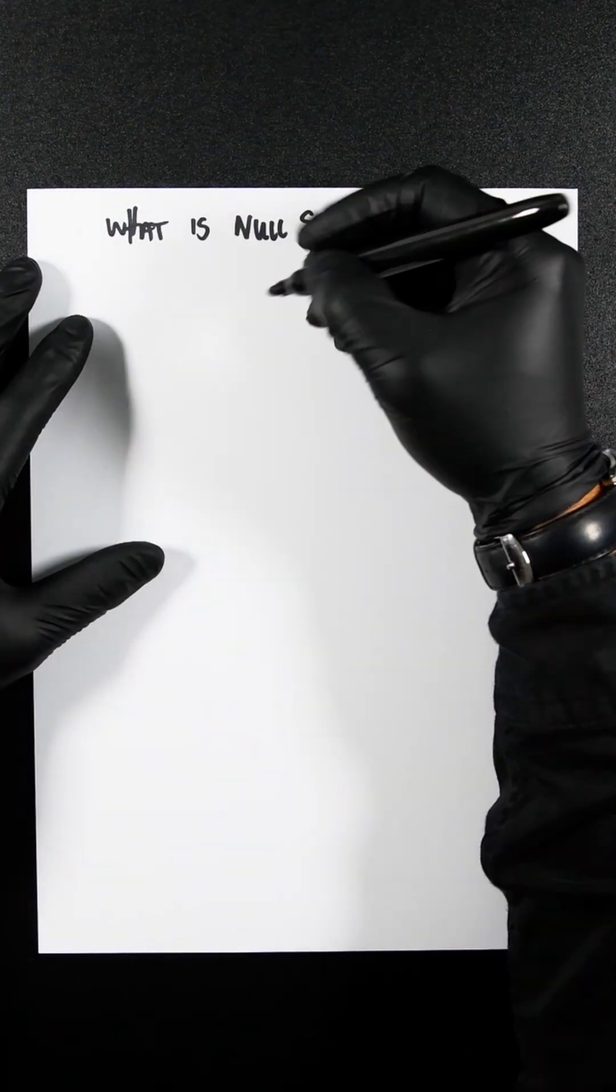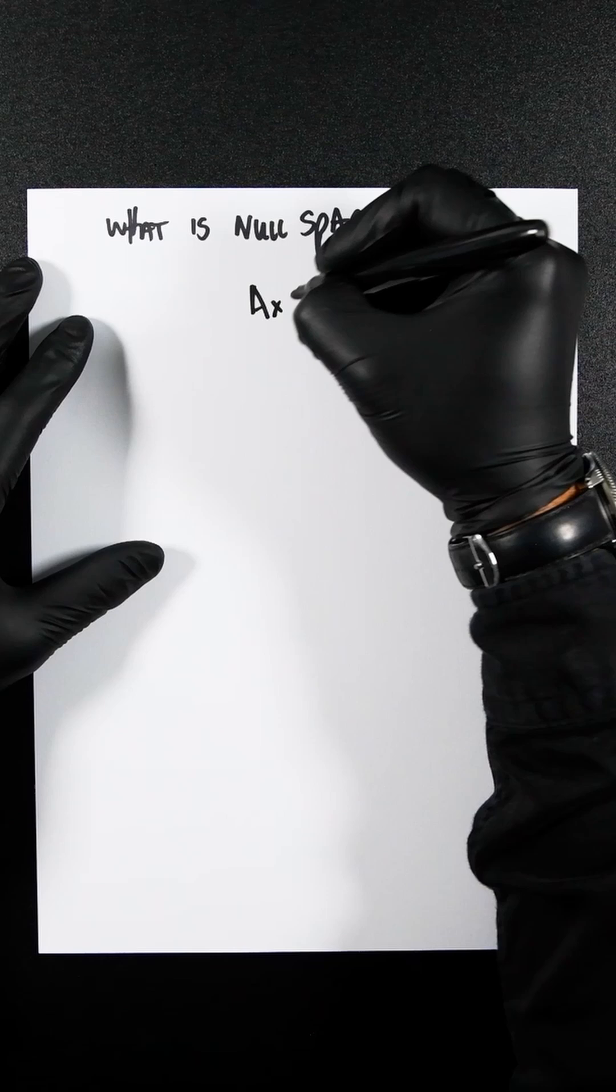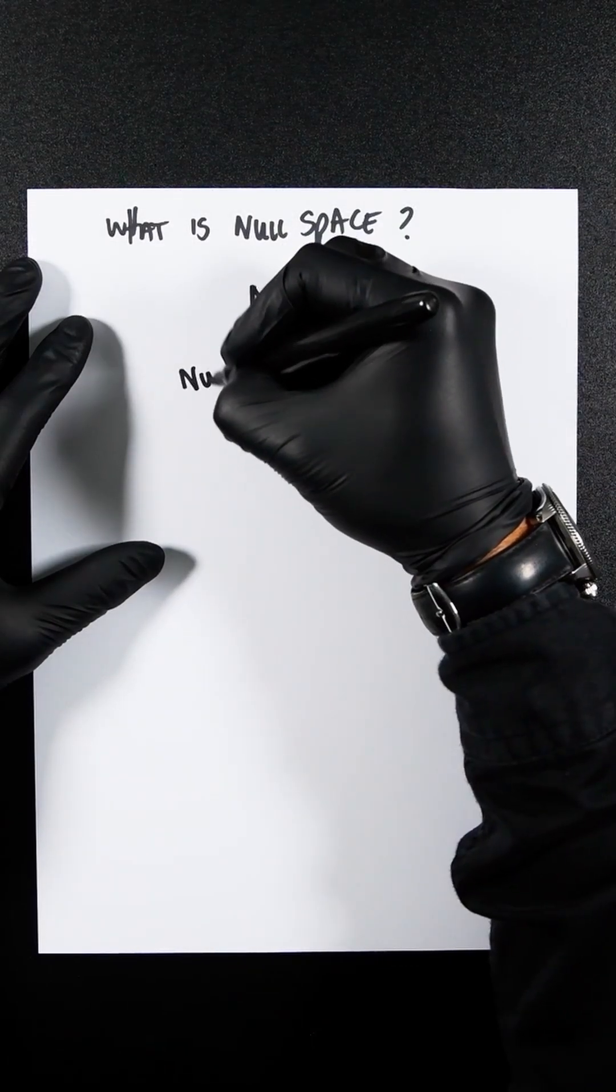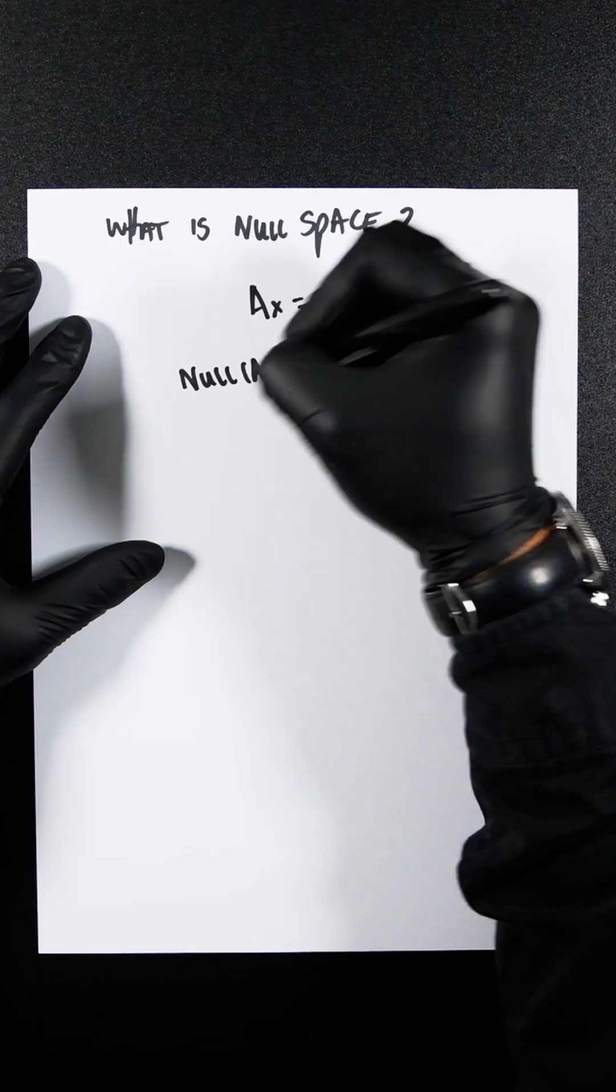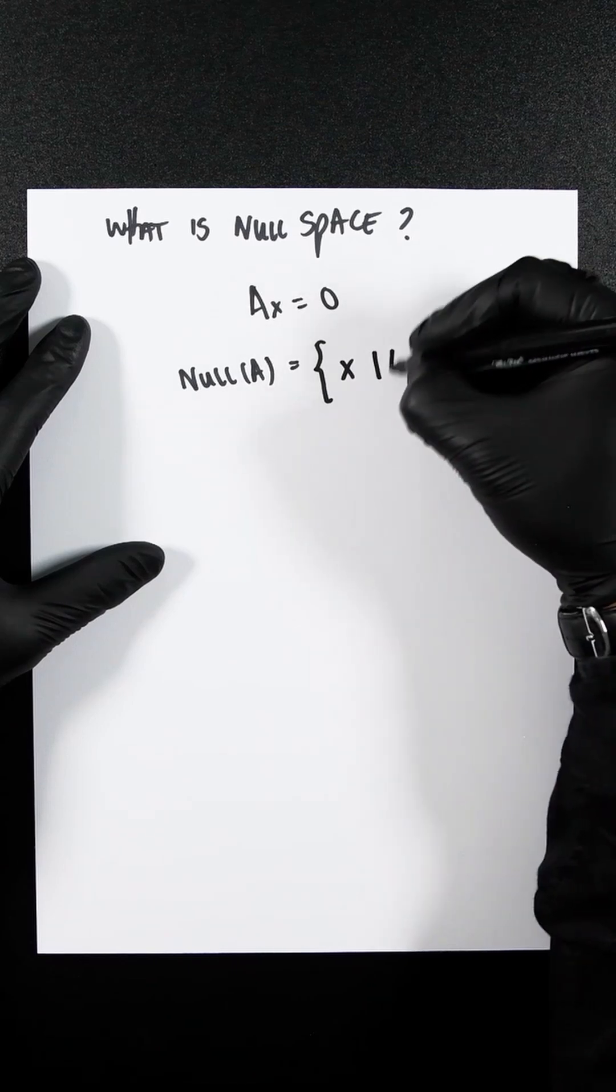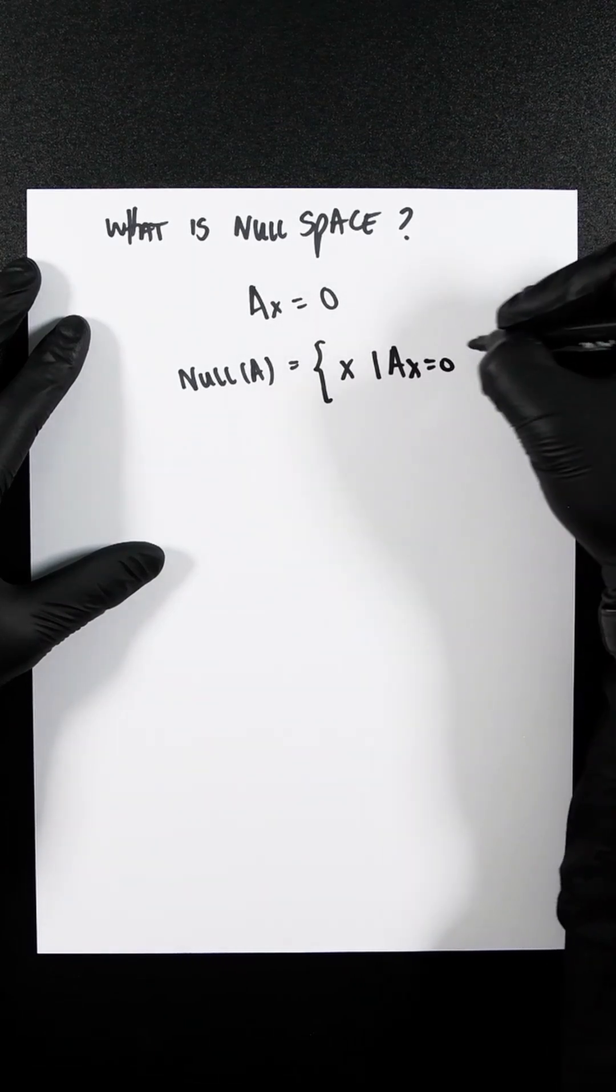So the set of all vectors x such that Ax equals 0. So the null space of this would be null A, and then you do this little squiggly bracket that looks cool, x with a line, and then Ax equals 0.